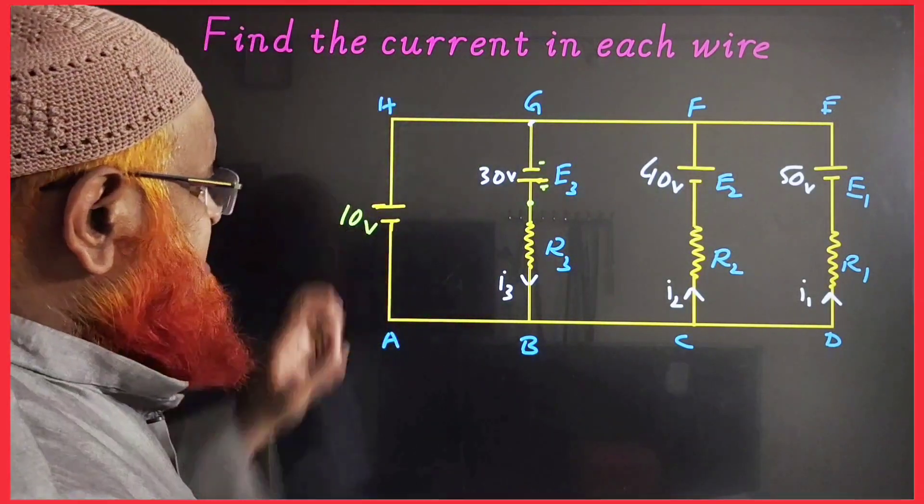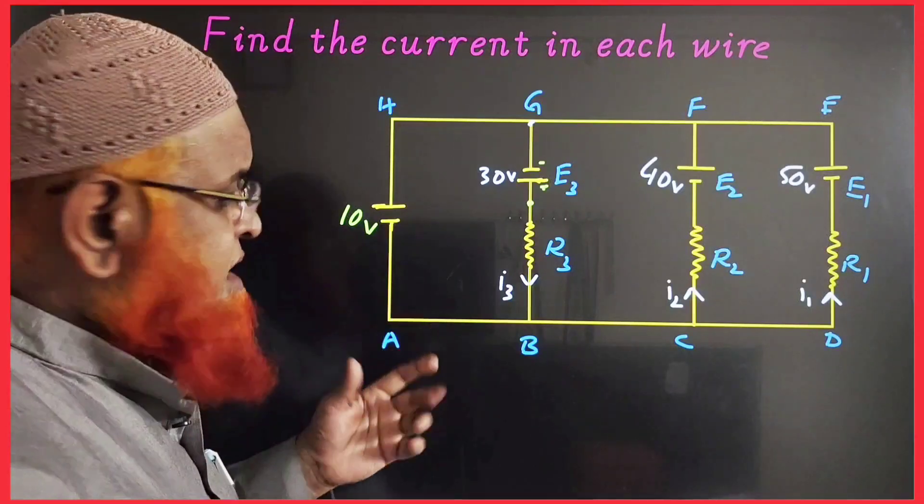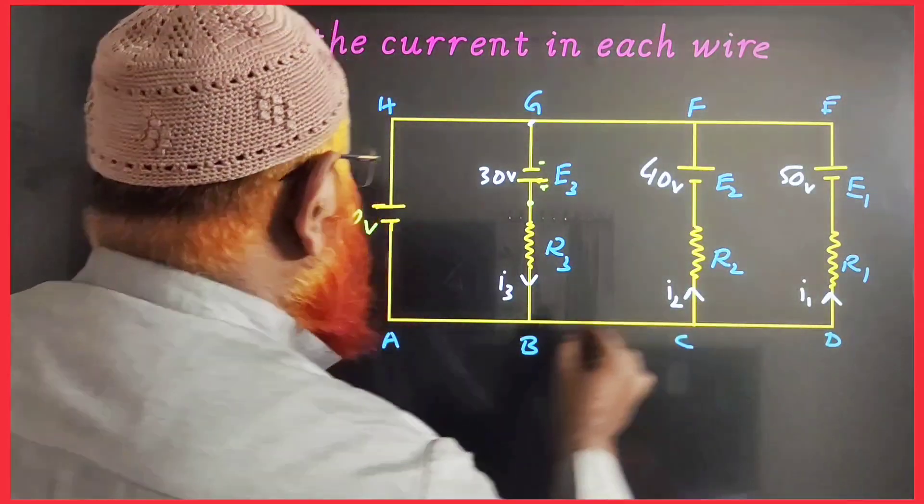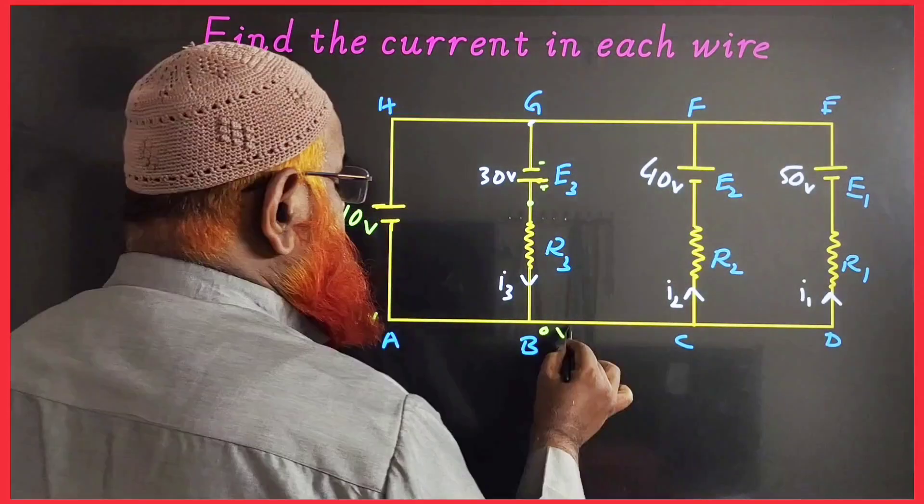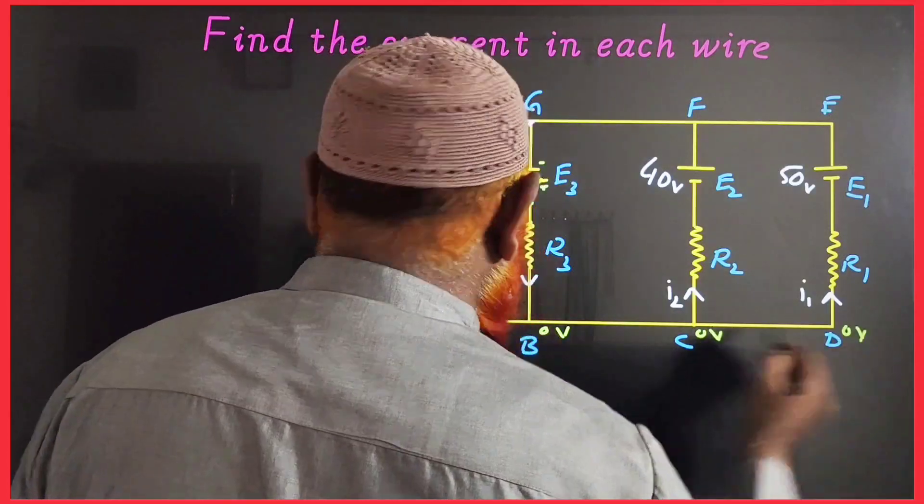Now, see this edge has 10 volts, and these edges can all be considered as 0 volts.